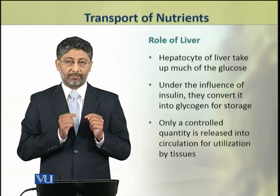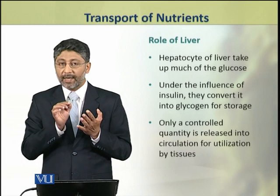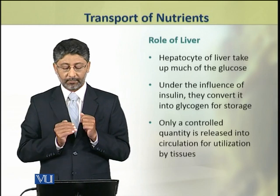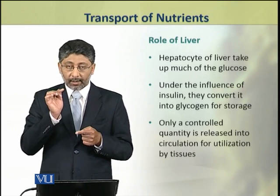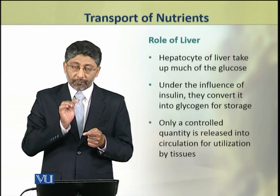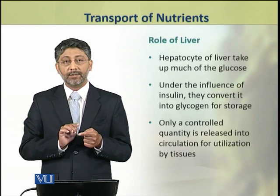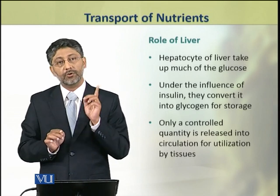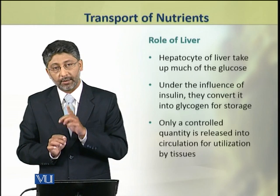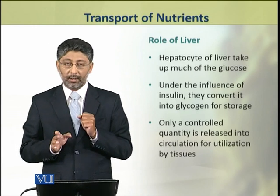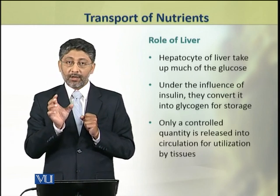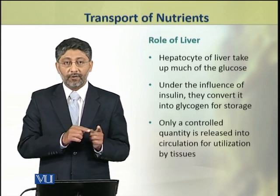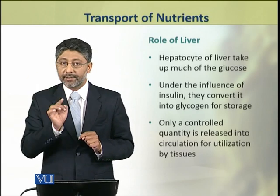In the liver, hepatocytes — that is, the cells of the liver — take up much of the glucose. Under the influence of insulin, these hepatocytes convert this glucose into glycogen and store it in the form of glycogen. Only a controlled quantity of glucose is released into blood circulation for delivery to the cells and tissues.